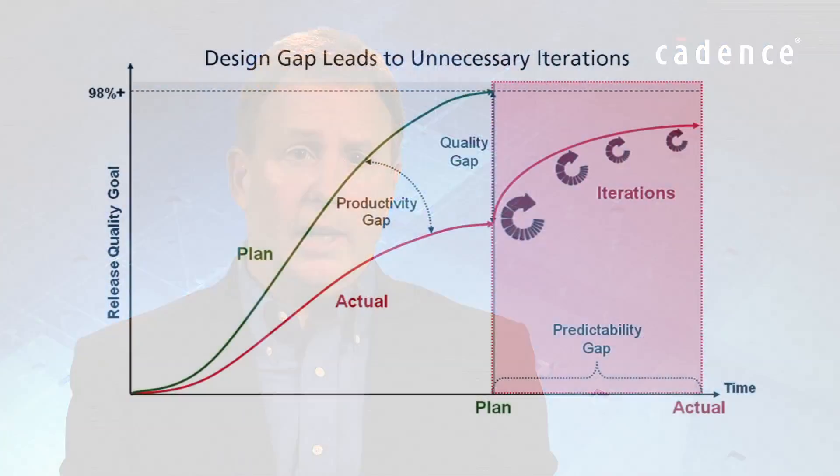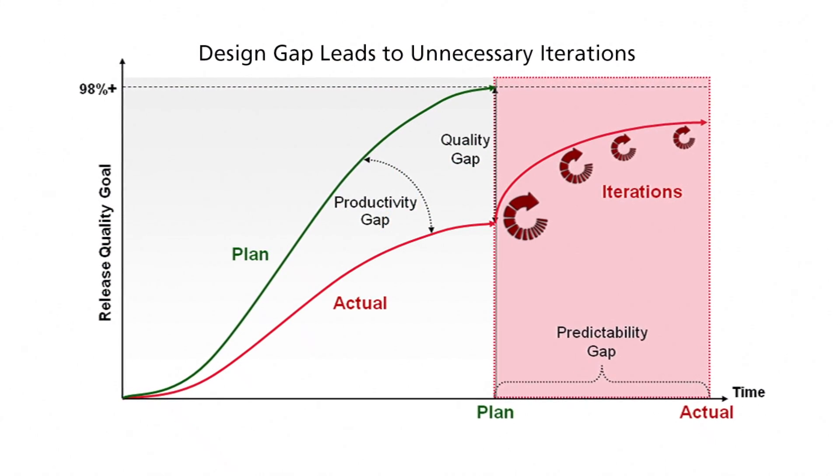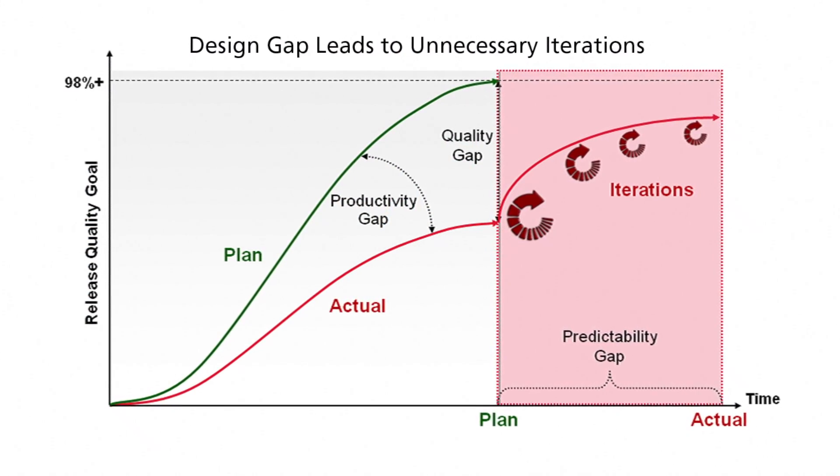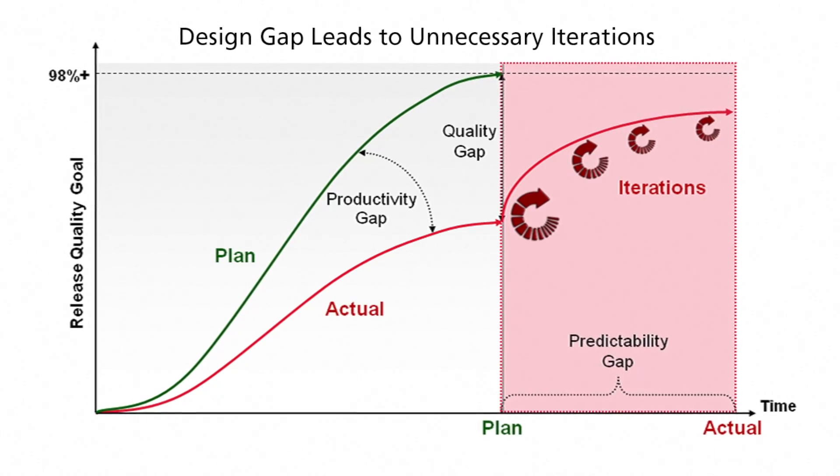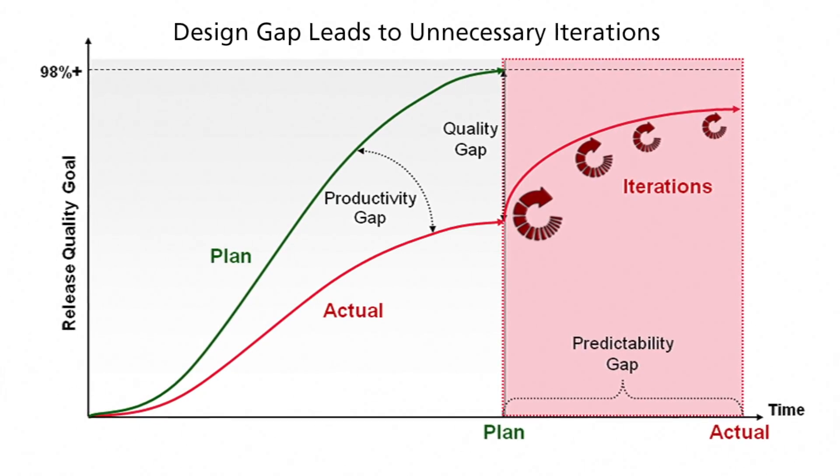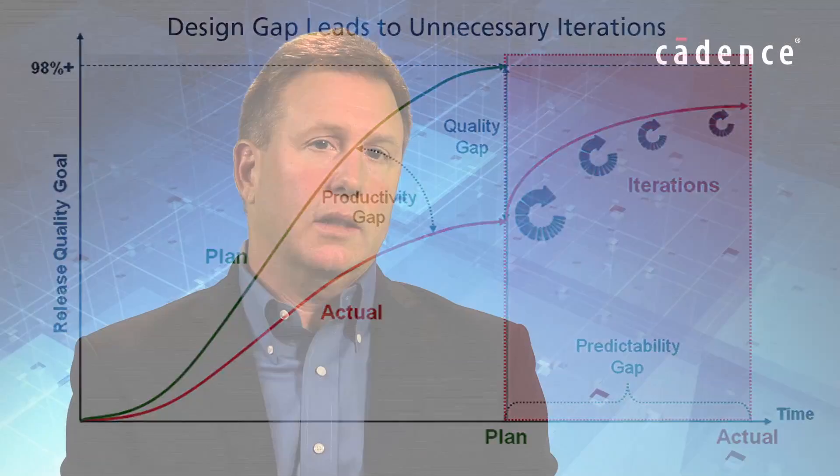It's not until you get into the verification phase after parasitic extraction and simulation are run that you can see the impact of those decisions. The result is that design teams will often spend weeks iterating back and forth between verification and implementation until design intent is met. And this leads to a significant loss in productivity.